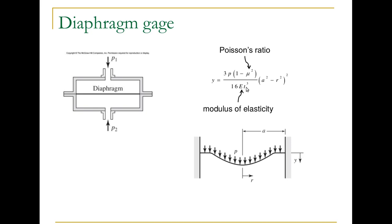So the thickness is in the denominator and you can see that the maximum displacement is going to be when R is equal to zero, that is whenever you're looking at the center of the diaphragm. The output of these sensors is usually linear with pressure as long as the deflection remains less than about one-third of the thickness of the diaphragm.